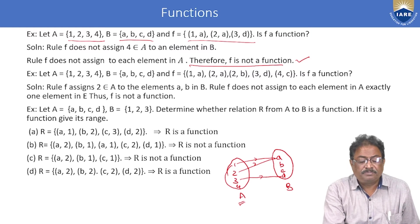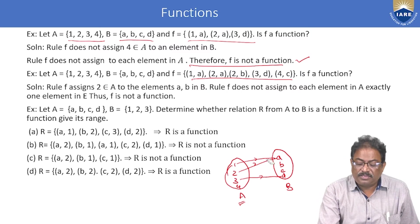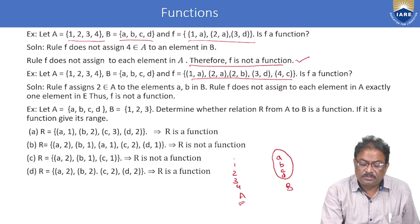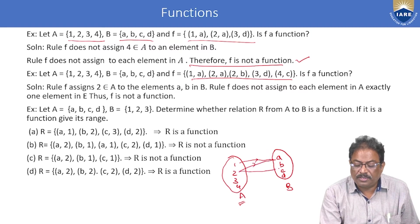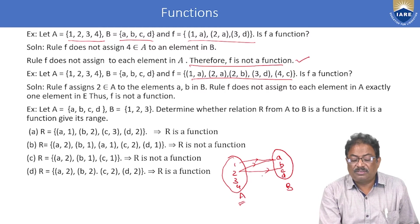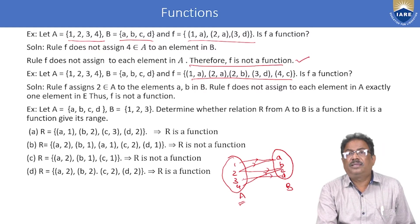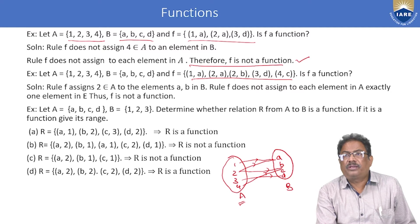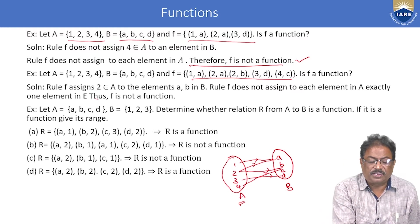Second example: the mapping is 1 to A, 2 to A, and also 2 to B. So 2 is related to A as well as B, meaning f(2) has two values — A and B — and 3 maps to D, 4 maps to C. Since f(2) does not give a unique value, this is not a function.